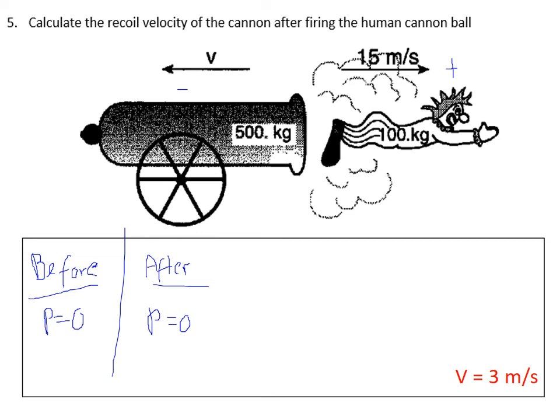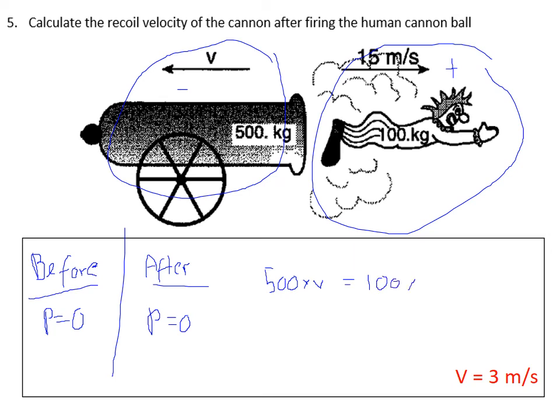So we're going to have here 500 times v. So this momentum here must be equal and opposite to this momentum here. So 500 times v must equal 100 times 15. That momentum there is 100 times 15 and that is 500 times v. We don't know what v is yet do we, so let's work out what it must be. So we've got 500v equals 100 times 15 is 1500.